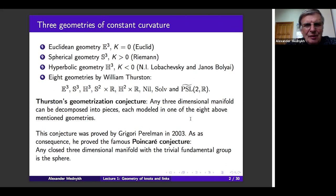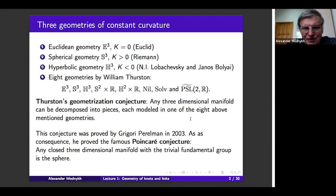Spherical geometry is a bit more complicated — in this case we have a sectional curvature of constant value k greater than zero, where k is a fixed constant. This geometry was investigated by Riemann and others. One more, and perhaps the most important geometry, is hyperbolic geometry, which admits a negative constant sectional curvature k, and was independently discovered by Nikolai Ivanovich Lobachevsky and Janos Bolyai.